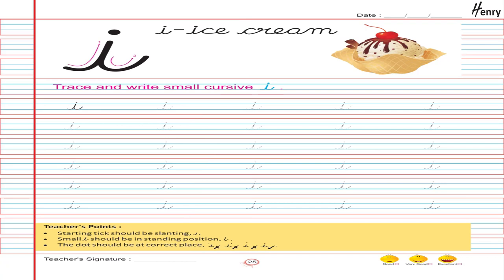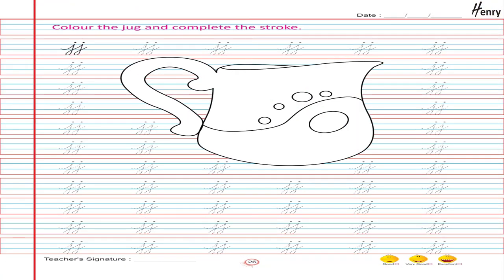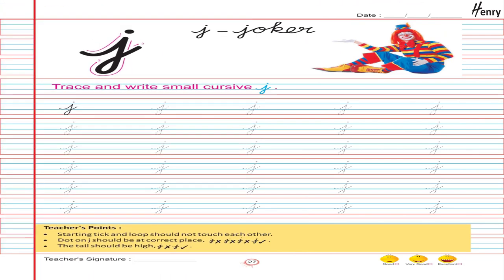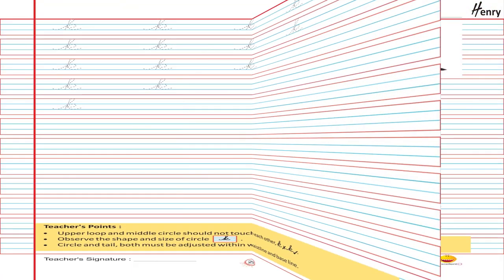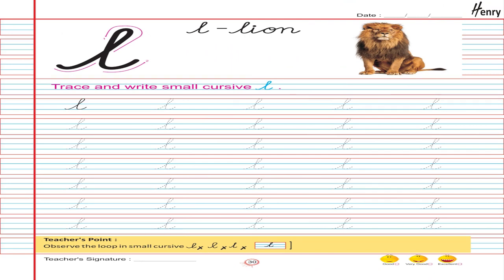I. Ice cream. Trace and write small cursive I. Color the jug and complete the stroke. J. Joker. Trace and write small cursive J. K. Kite. Trace and write small cursive K. L. Line. Trace and write small cursive L.